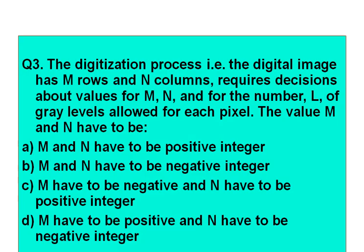Question number three: The digitization process — a digital image has M rows and N columns — requires decisions about the values for M, N, and the number L of gray levels allowed for each pixel. Option A: M and N have to be positive integers. Option B: M and N have to be negative integers. Option C: M has to be negative and N has to be positive. Option D: M has to be positive and N has to be negative.